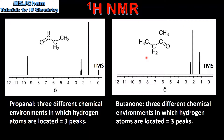And finally we have the NMR spectrum for butanol. Although we have two CH3 groups, the hydrogen atoms in these CH3 groups are in different chemical environments. The hydrogen atoms in the CH2 group are also in a different chemical environment. So that means we have three different chemical environments in which hydrogen atoms are located and three peaks on the NMR spectrum.